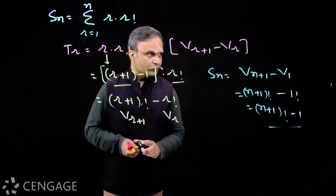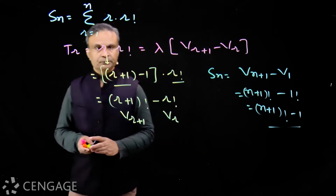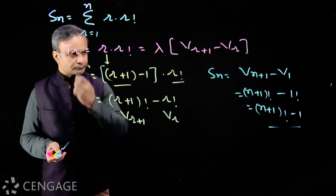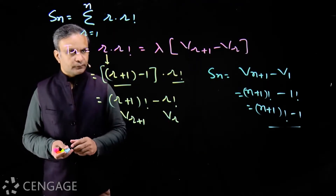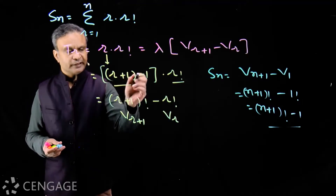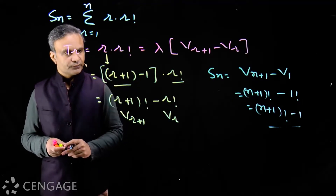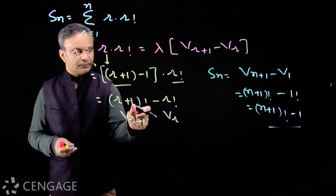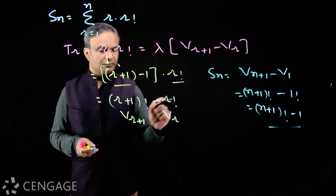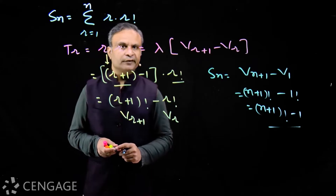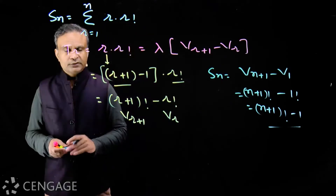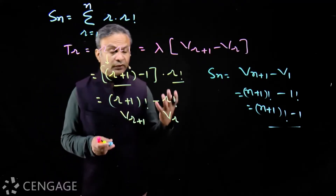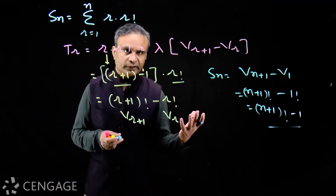So you can see this algorithm is working here — we are adding and subtracting 1. So we have (r+1) factorial minus r factorial.